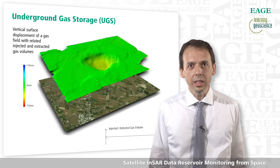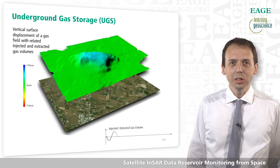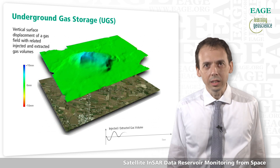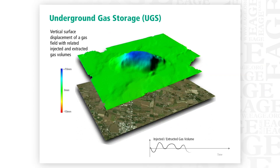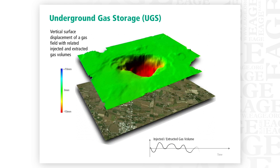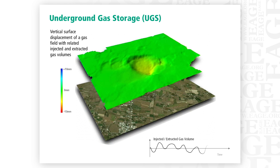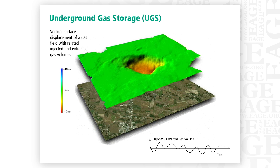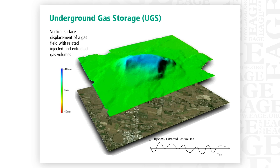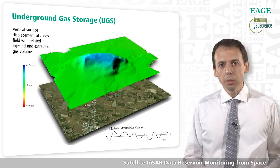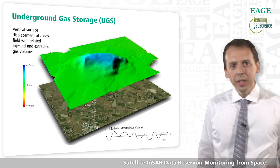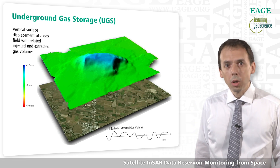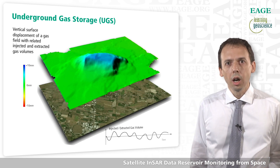Apart from CCS, underground gas storage is another very intriguing application of SAR data. Typically we store gas in summer and pump gas for heating in winter. By correlating the injected and extracted gas volume with the vertical displacement of the terrain, it's possible to calibrate geomechanical models and then fix, in a much more reliable way, the maximum pressure of the UGS.